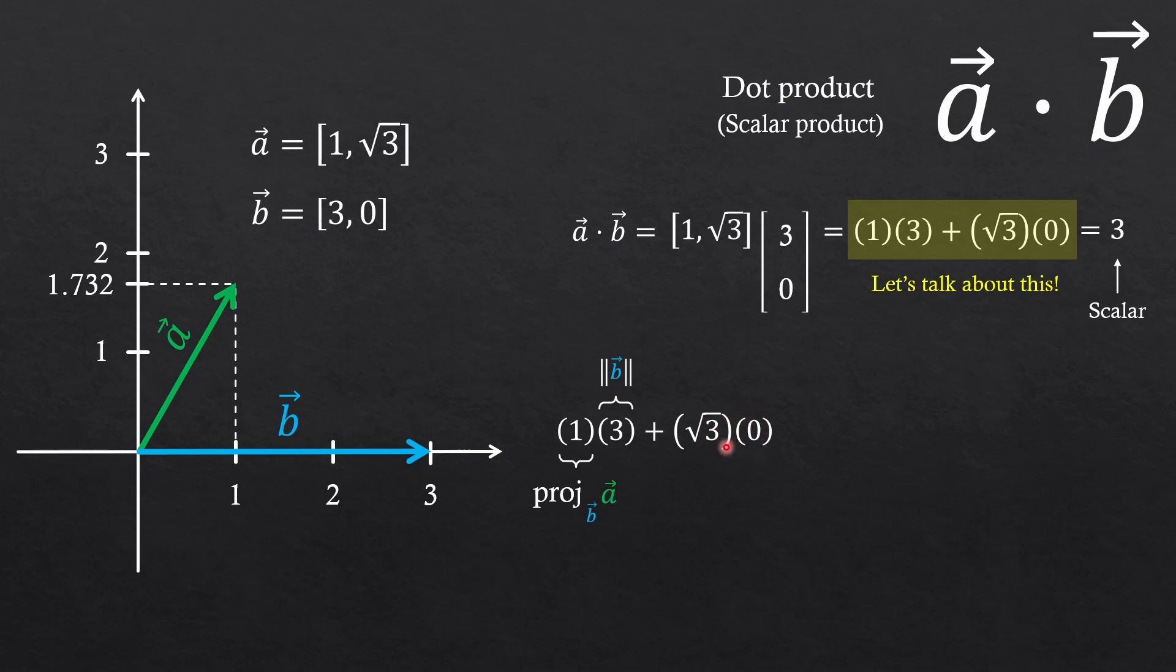So we could have done the same thing with the second term, okay? But in this case, the second term became zero, so we don't need to worry about it. We see that this is pretty much what we actually did for the dot product. Magnitude of the vector b times the projection of a onto b. Now let's further talk about this projection.